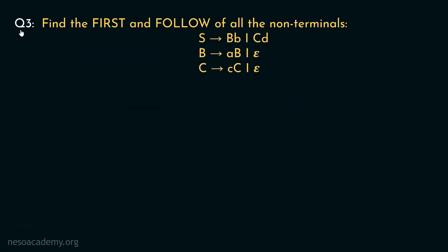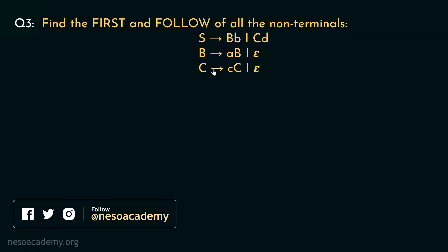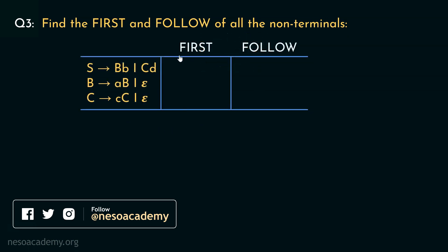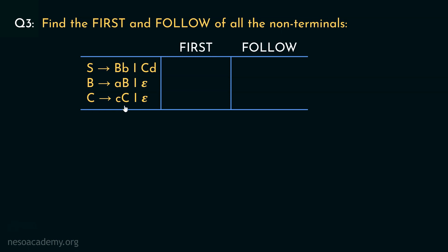Let's now move on to the next question: find the first and follow of all the non-terminals. These are the production rules given. We will perform the same drill and begin finding first. So we are going to start off with C, which happens to be the non-terminal of the last production. Observe this production rule carefully: C can be rewritten as lowercase c followed by uppercase C, or Epsilon. Therefore, in the first of C, we will have the symbols lowercase c and Epsilon. Coming to B, B can be rewritten as lowercase a followed by capital B, or Epsilon. Therefore, in the first of B, we will have the symbols a and Epsilon.